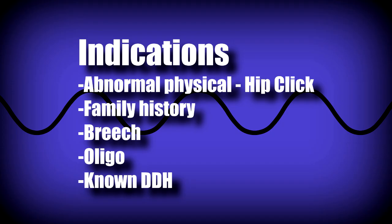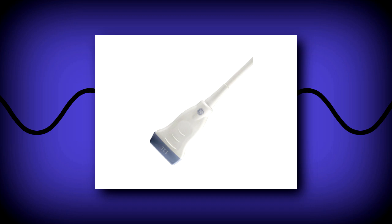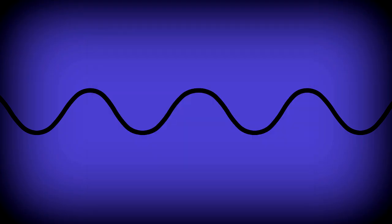Indications for hip sonography are: abnormal physical exam, a family history of hip dysplasia, breech presentation, oligohydramnios, and also if there is a known hip dysplasia that they're following. You will need a linear transducer — for bigger babies you can use a 9, and if the babies are really small you can use a 15. The exam should typically be done after one month. It's better if the baby is at least one month to discount the possibility of getting physiologically immature hips, which are normal and typically resolve by three months.